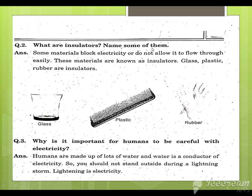Question 2: What are insulators? Name some of them. Some materials block electricity or do not allow it to flow through easily. These materials are known as insulators: glass, plastic, and rubber.